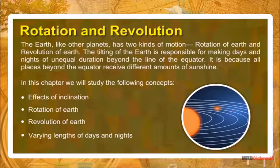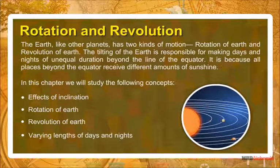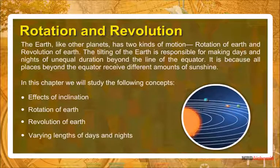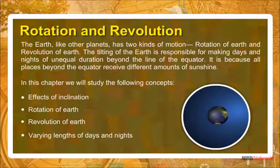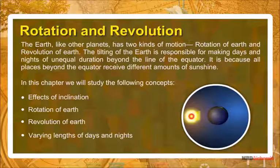The Earth, like other planets, has two kinds of motion: rotation and revolution. The tilting of the Earth is responsible for making days and nights of unequal duration beyond the equator, because all places beyond the equator receive different amounts of sunshine.